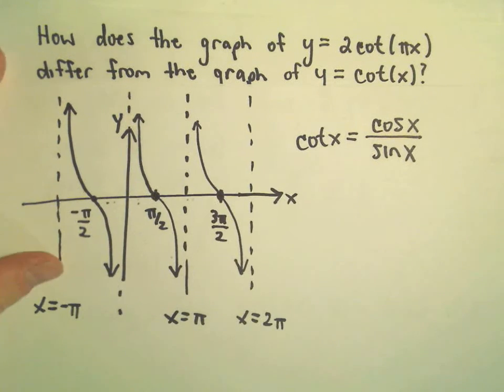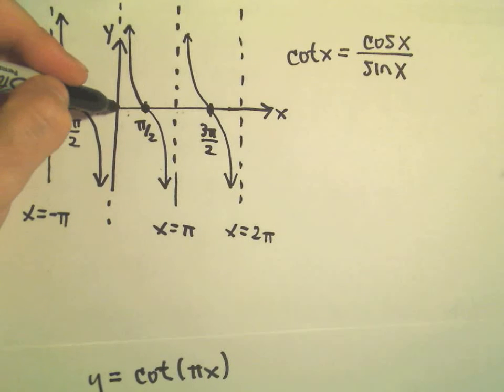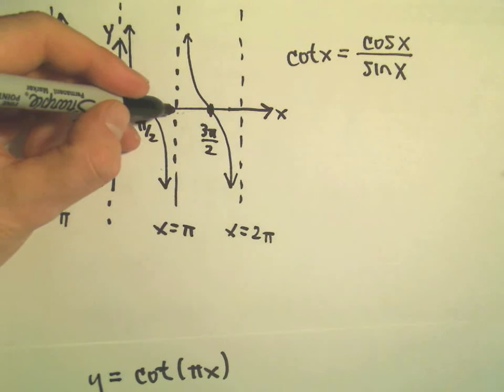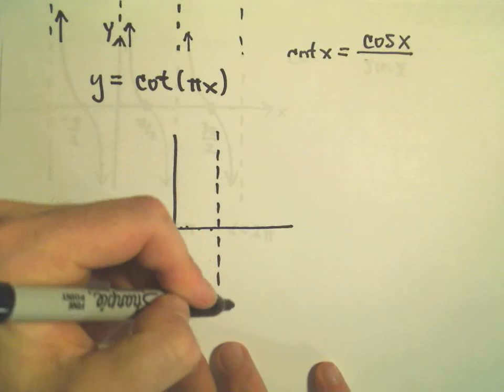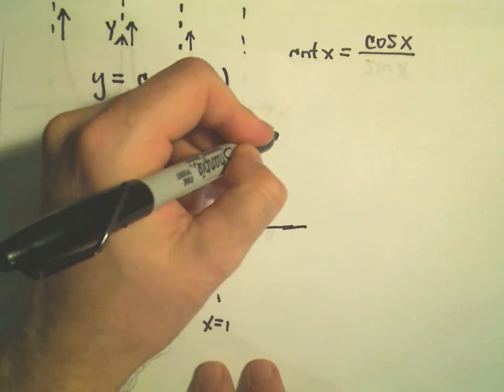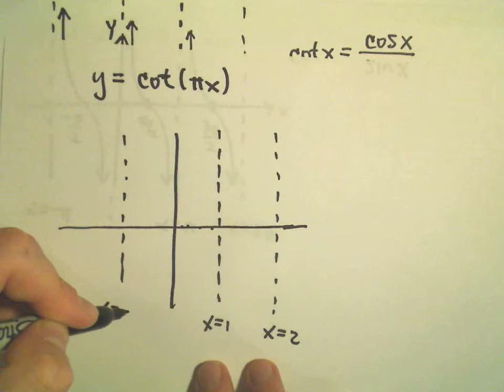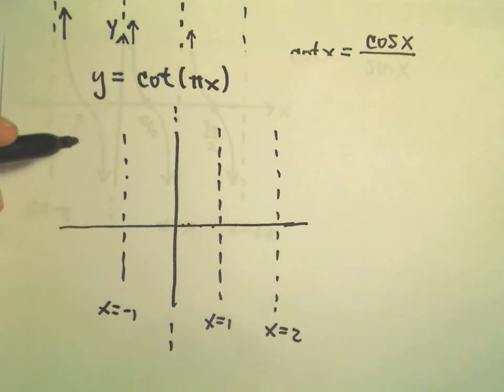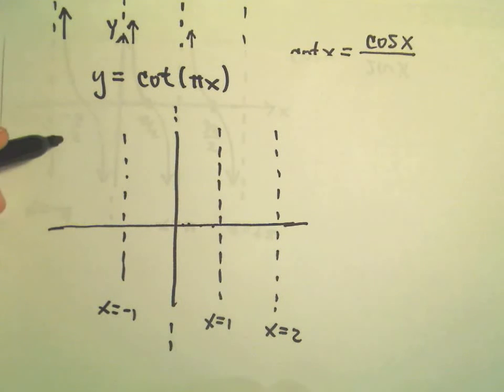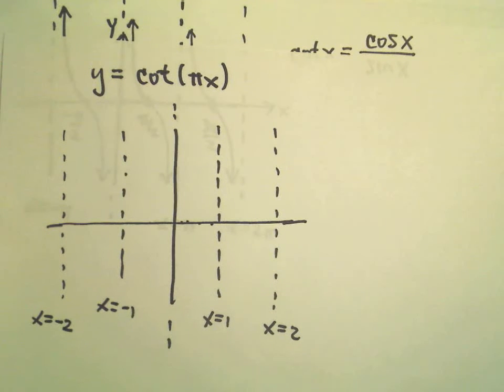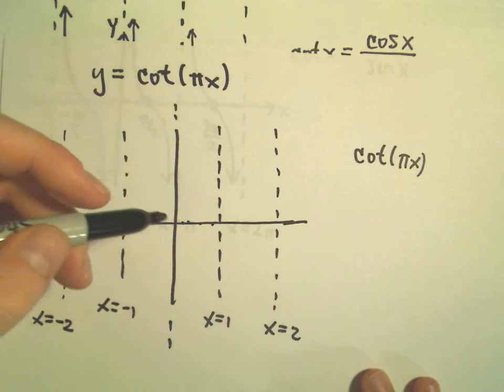Again, we said that changes our period. We said our new period now becomes just 1. So instead of having to go, if you think about starting at the origin and walking over π units to hit your first asymptote, now we're just going to have to walk over 1 unit until we hit the first asymptote. So this is going to be an asymptote at x = 1. There'll be an asymptote at x = 2, at x = -1, at x = 0, etc. There's going to be asymptotes at every integer: 1, 2, 3, 4, -1, -2. Maybe we'll stick x = -2 in there as well. So that would be the graph. That's how cot(πx) is going to change things.